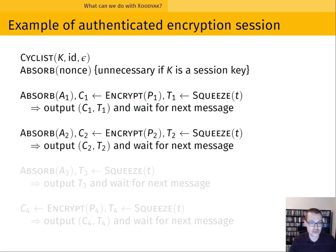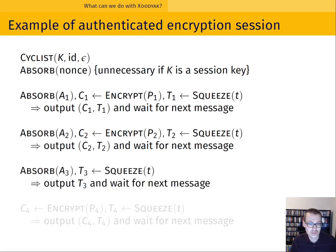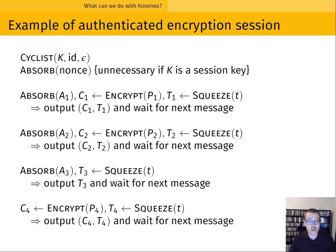The next message looks much the same: we absorb metadata, encrypt plaintext, produce the authentication tag, and output ciphertext c2 and tag t2. We can also handle metadata-only scenarios very efficiently — we absorb metadata string a3, have no plaintext, and immediately squeeze tag t3. Likewise, we can handle plaintext-only scenarios: encrypt plaintext p4, obtain ciphertext c4, and squeeze tag t4. We repeat this process for as many messages as we wish to handle.